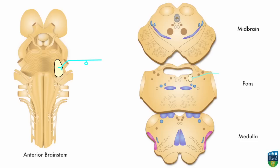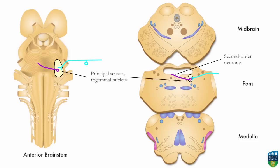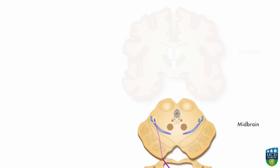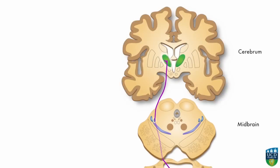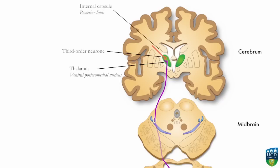The first order neuron synapses on second order neurons in the principal sensory trigeminal nucleus. The second order neuron crosses over to enter the contralateral trigeminal lemniscus, joining fibers from the spinal lemniscus. The axon of the second order neuron terminates in the thalamus, synapsing on third order neurons that then carry the impulse to the appropriate area of the primary somatosensory cortex.